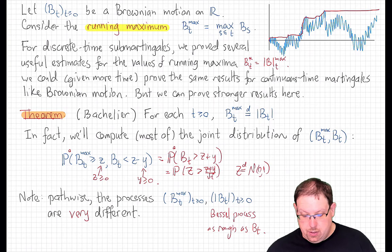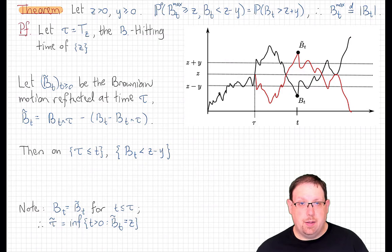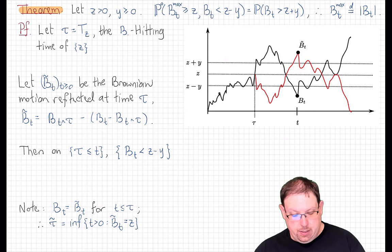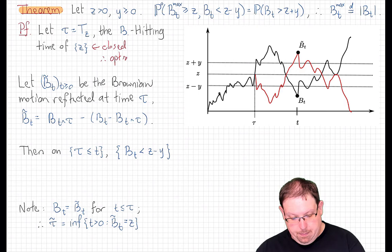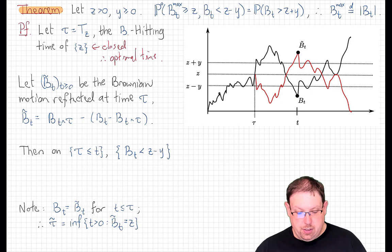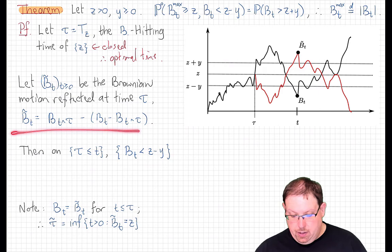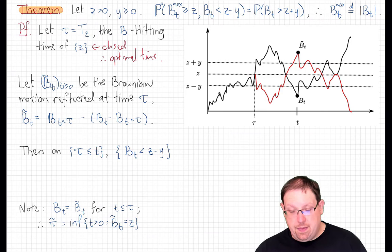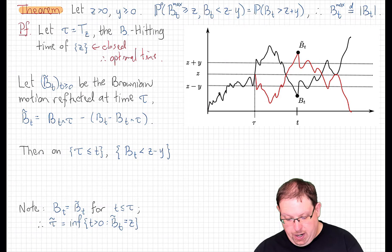To prove this, we're going to use the reflection principle applied with the hitting time of height z. The singleton set {z} is a closed set, and Brownian motion has continuous paths, and therefore tau is an optional time for the Brownian motion filtration. That means from the reflection principle we can reflect vertically at this time and still have a Brownian motion. So let b̃t be that new Brownian motion. We let the Brownian motion flow until it reaches height z, and then reflect it vertically.